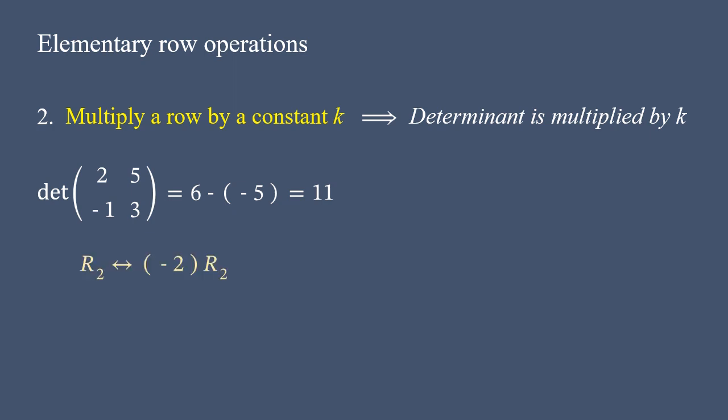Now multiply the second row of this matrix by negative 2 for demonstration purposes, and compute the determinant of the resulted matrix. We get negative 22. This comes out to be negative 2, which is the multiplier in this example, times by 11.